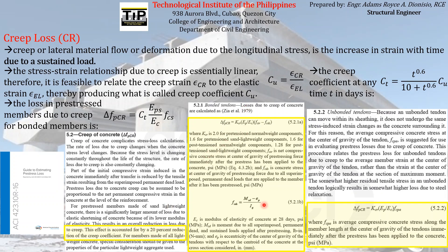If not, you can proceed with using the formulas shown here. To account for the effect of sand lightweight concrete, we have to reduce the magnitude of the creep coefficient KCR before continuing to compute for the pre-stress loss due to creep.